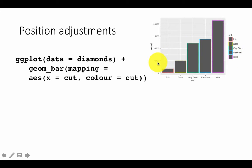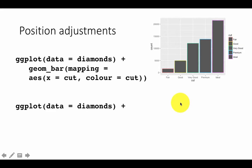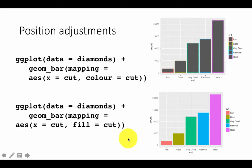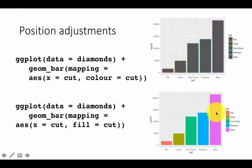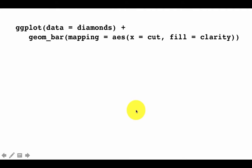One might have thought that color would determine the color of the bar itself, but that is not how color works. Color usually determines the color of a point or a line. When you want the whole bar's color, you use the fill attribute. If you say fill equals cut, then each bar has a different color. As I said, this is not a particularly useful chart since the height is already based on the cut — color is just redundant and crowding the chart. I'm using this just to motivate the following discussion.